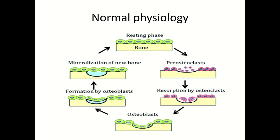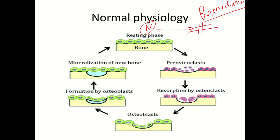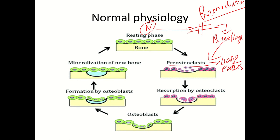Before understanding what happens in osteoporosis, let us understand normal physiology of the bone remodeling cycle. In the normal bone remodeling cycle, after a fracture causes breakage, this leads to pre-osteoclast synthesis. Osteoclasts are bone eaters. Once the bone eaters are in action, they eat up the fractured bony part.